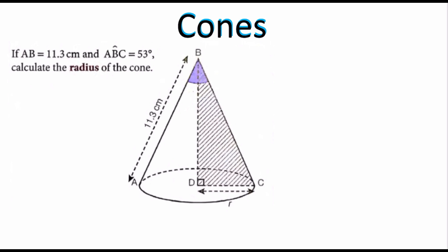We have a diagram that we can use to visualize. We can see that DC represents the radius of the problem. We also know that AB is 11.3, and because this is a cone, that is our slant height, which means that BC is also going to be 11.3 centimeters. So what we have to work with right now is angle ABC, which is the entire top angle of that cone — it is 53 degrees.